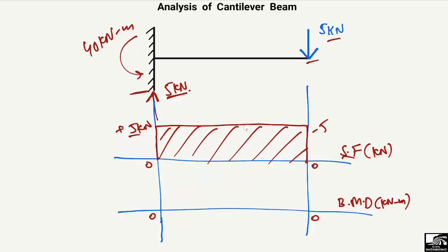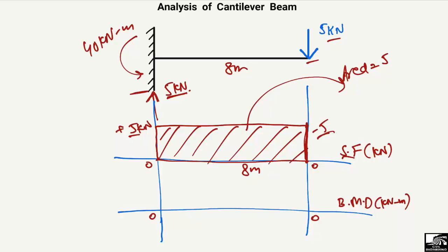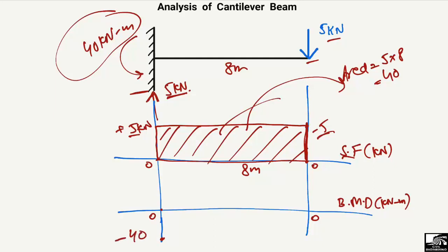For the bending moment diagram, we find the area of the shear force rectangle: height is 5 kilonewton and base is 8 meters, giving 40 kilonewton meter. We know the moment at the fixed support is 40 kilonewton meter, so the bending moment is represented as minus 40 kilonewton meter at the support. Starting from the free end it is zero, since there is no support there, and at the fixed support it is 40 kilonewton meter.